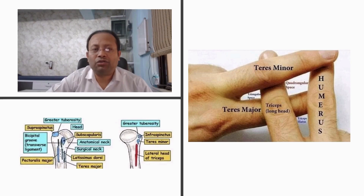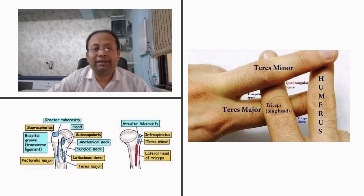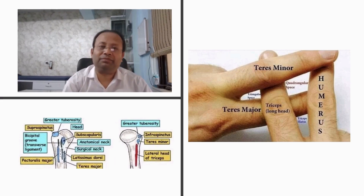The landmarks which are important in locating the quadrangular space are the upper end of the humerus, the triceps long head, teres minor, and teres major.